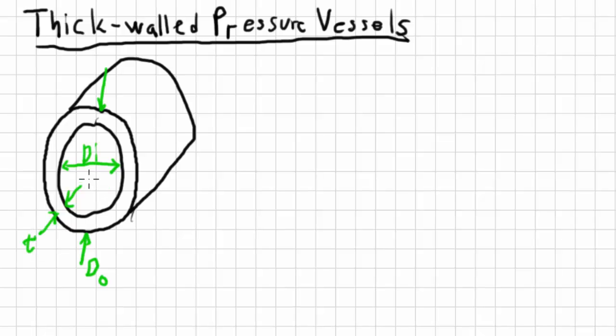Inside, we of course have the pressure P. In a thin-walled pressure vessel, it's so thin that there's really no major difference between what's going on towards the inside and what's going on towards the outside. But in a thick-walled vessel, we have a higher stress, usually on the inside, and a lower stress on the outside.